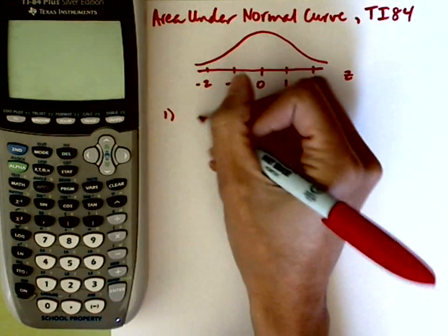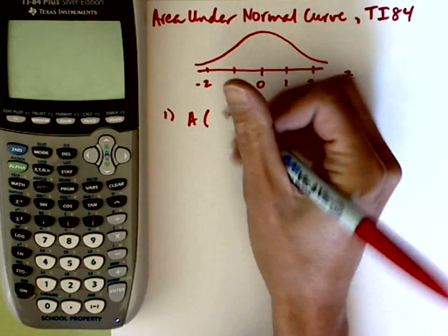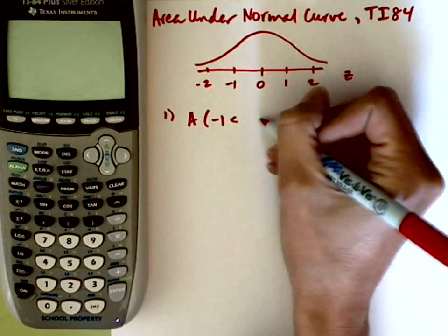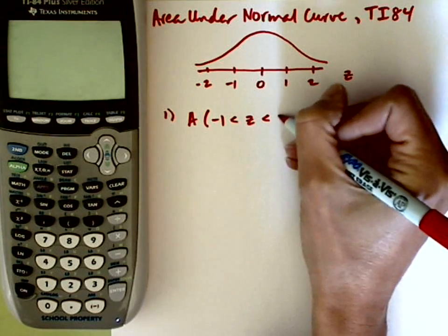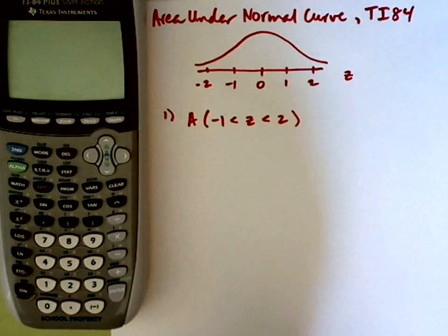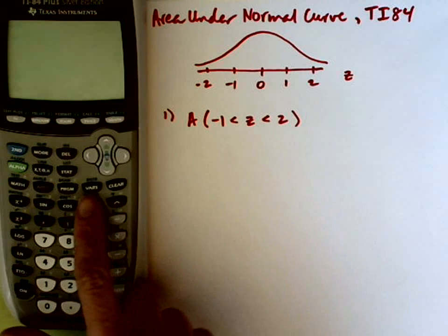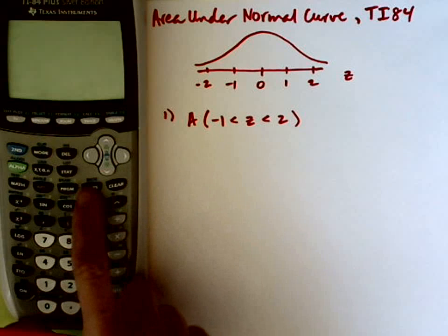For our first example, let's look at the area under the normal curve for z-scores between negative 1 and 2. To access the area in the calculator, I'm going to go to the distribution menu, which is right above the vars key, just next to the lower arrow key.